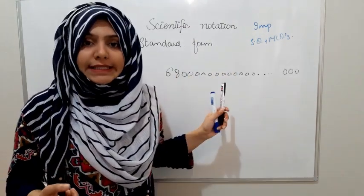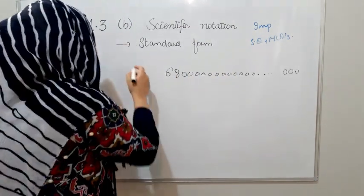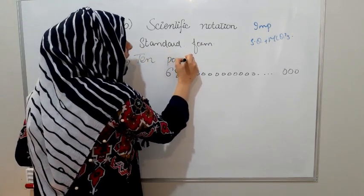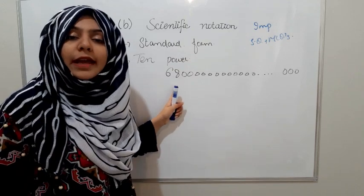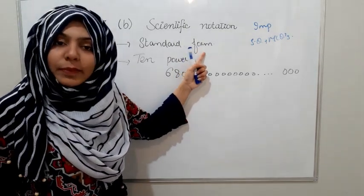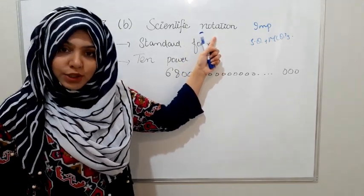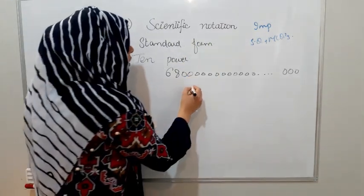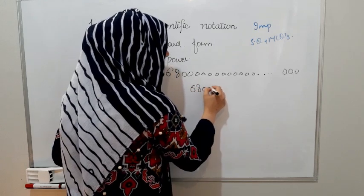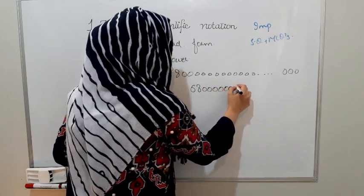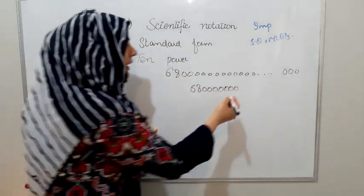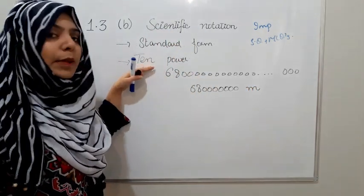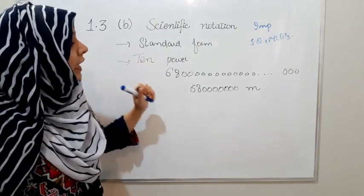How can a number be written in standard form? It becomes a power of 10. When it is expressed as a power of 10, we say it is in standard form, meaning we have used scientific notation. Let's suppose we have the number 6800. There is no unit here — no meter, no kilogram. We are just thinking about how it can be written as a power of 10.